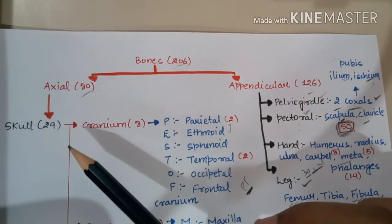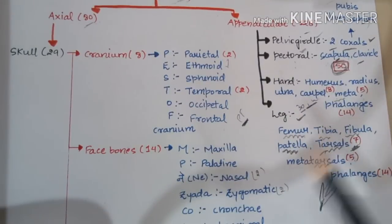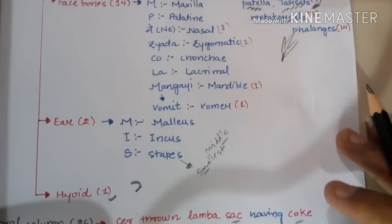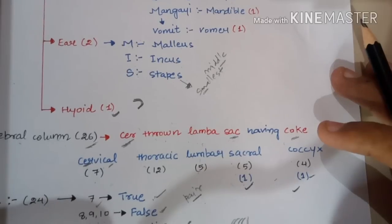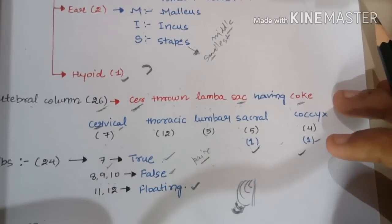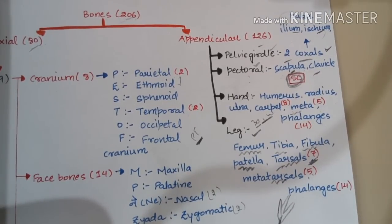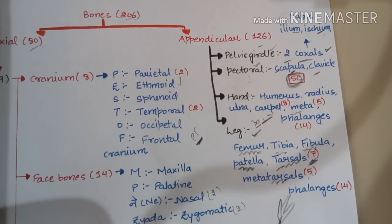Quick recap: Skull has 29 bones — Cranium 8 (trick: PEST of cranium), Facial bones 14 (trick: MP ne zyada Cola mangai vomit), Ear ossicles 6 (SIM: Malleus, Incus, Stapes), Hyoid 1. Vertebral column 26 (Sir thrown lamba sack having coke: Cervical, Thoracic, Lumbar, Sacral, Coccyx). Ribs 24 — true, false, and floating — plus Sternum. Appendicular skeleton: Pelvic girdle (Ilium, Ischium, Pubis), Pectoral girdle (Scapula, Clavicle). Hand: Humerus, Radius, Ulna, Carpals, Metacarpals, Phalanges. Leg: Femur, Tibia, Fibula, Patella, Tarsals, Metatarsals, Phalanges.